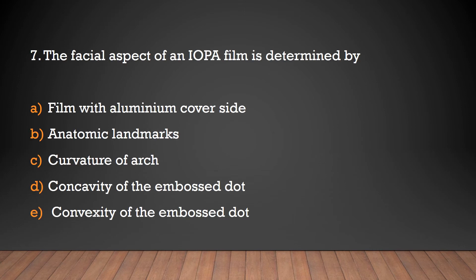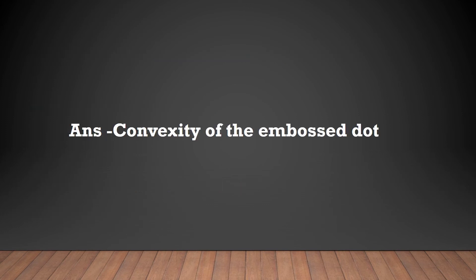The facial aspect of an IOPA film is determined by: film with aluminum cover side, anatomic landmarks, curvature of arch, concavity of the embossed dot, or convexity of the embossed dot? The answer is convexity of the embossed dot.